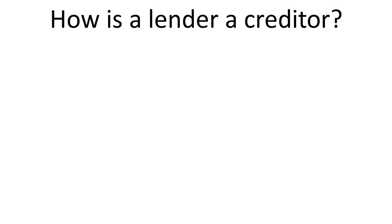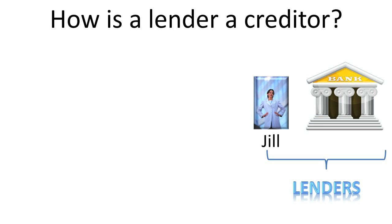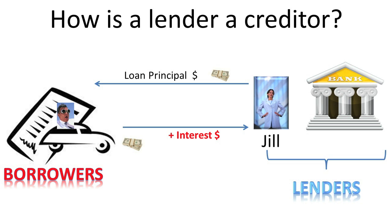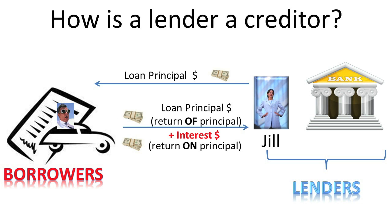How is a lender a creditor? Jill will represent lenders. Jill lends a certain amount of resources, called principal, to borrowers, then charges a fee, called interest, for using the principal. Over the life of the loan, if all goes well, Jill will receive interest payments classified as return on principal, as well as a return of the original principal she lent out.